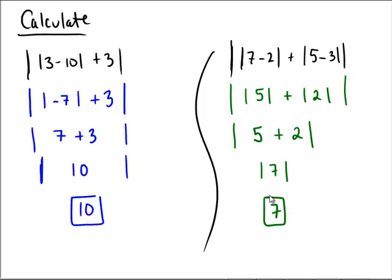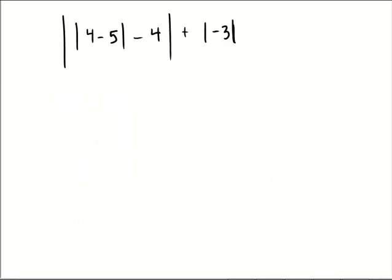Why don't we try one on our own? Pause the video and see if you can figure out the answer. Assuming you gave it a shot — we have a big absolute value which has inside of it a smaller absolute value for four minus five. Four minus five is negative one, minus four.